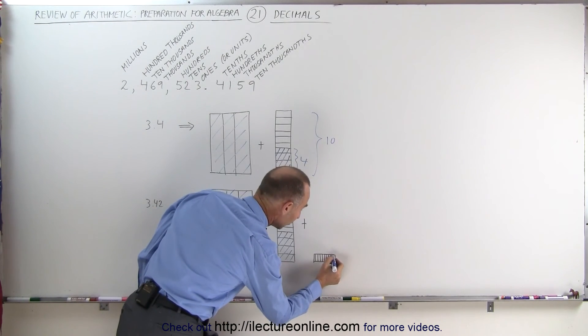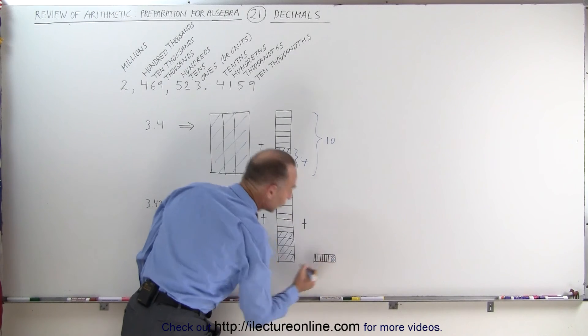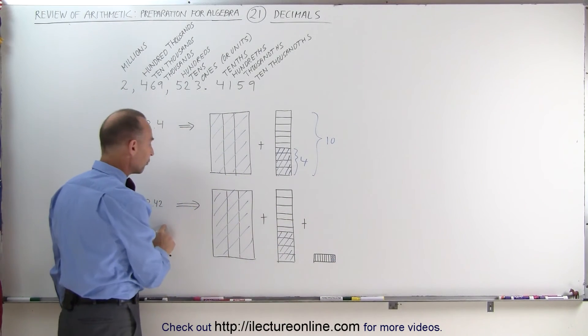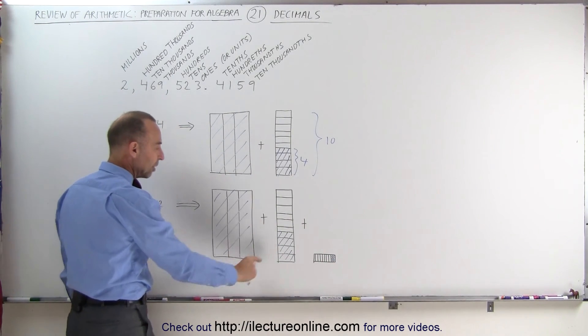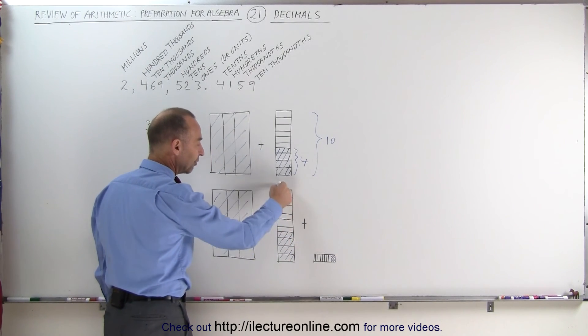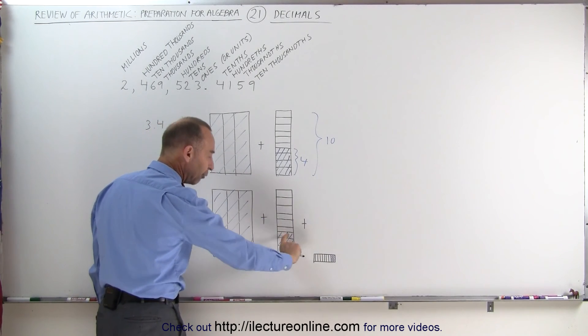Since we have 2 of them, we will just go ahead and color in 2 of those pieces. So 3.42 means you have 3 whole units, you have 4 tenths of a unit, or if you divide a unit into 10 equal pieces, you have 4 of them.